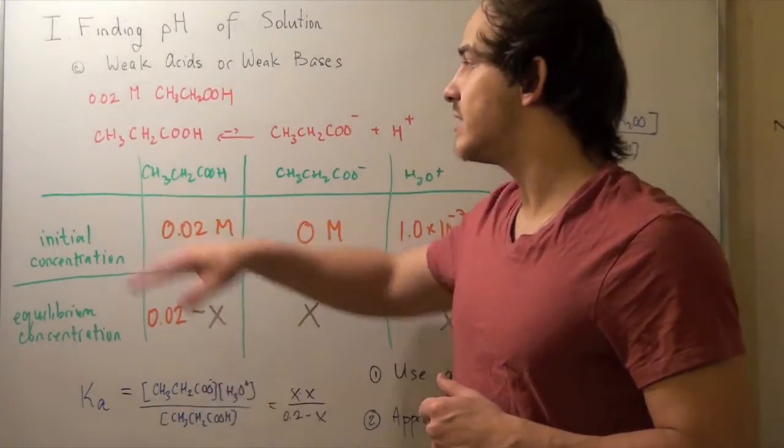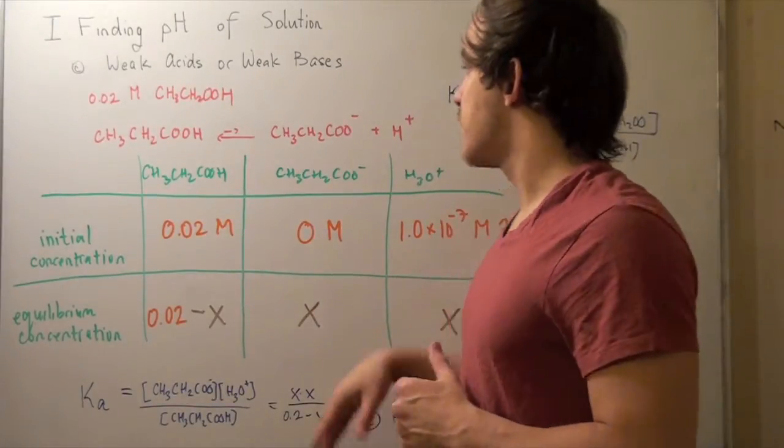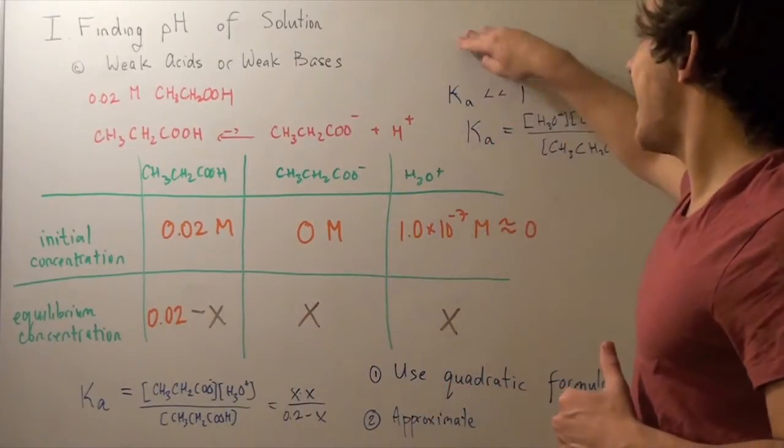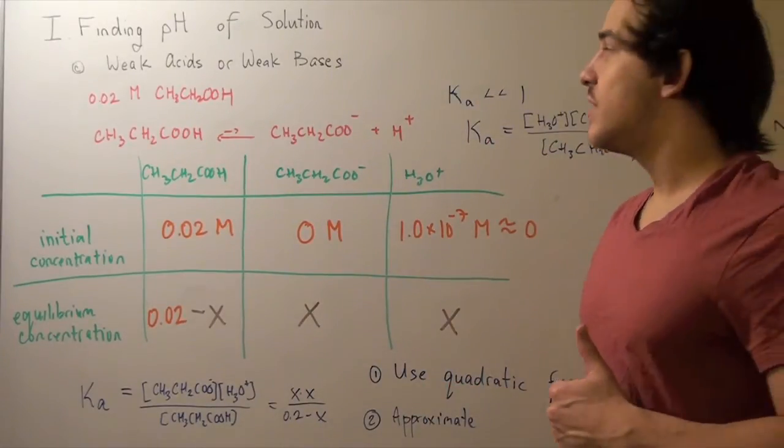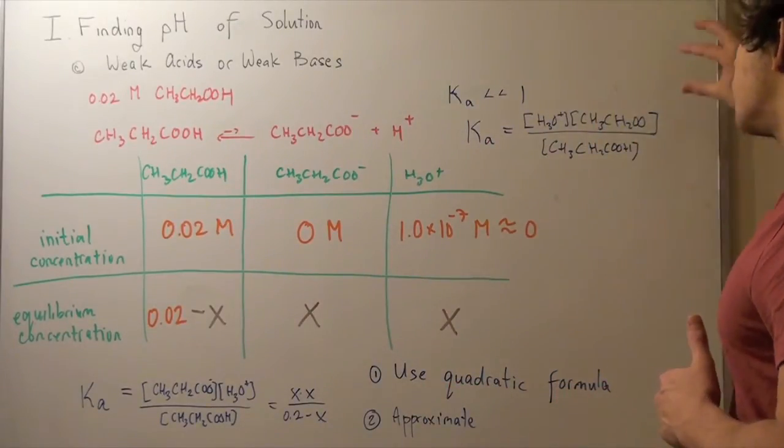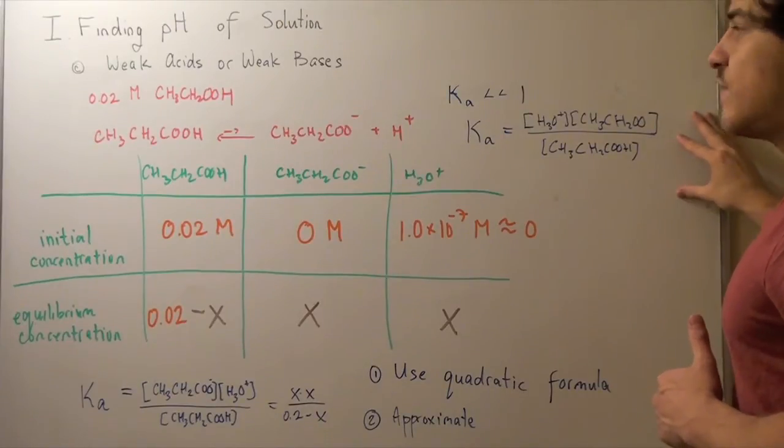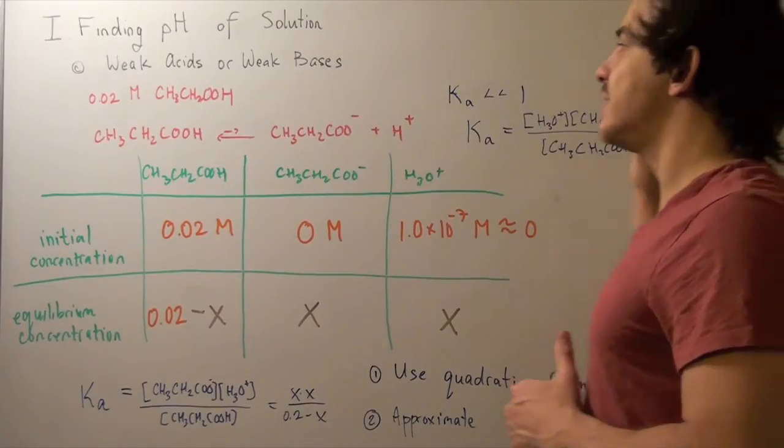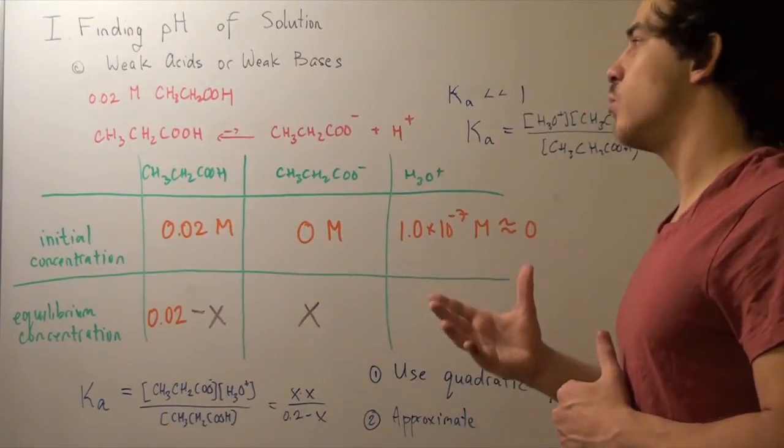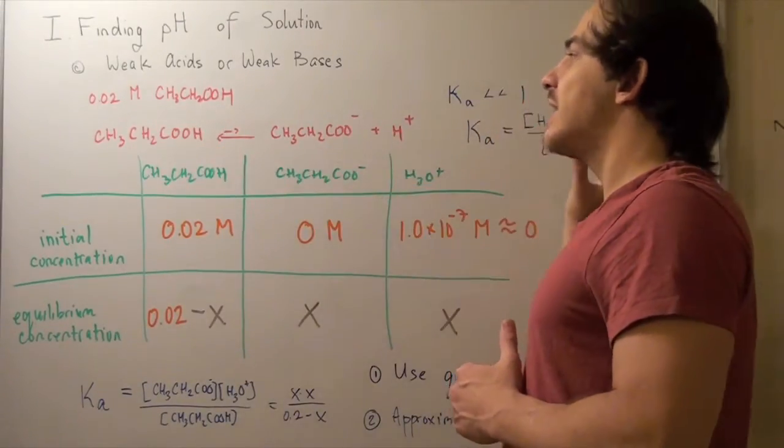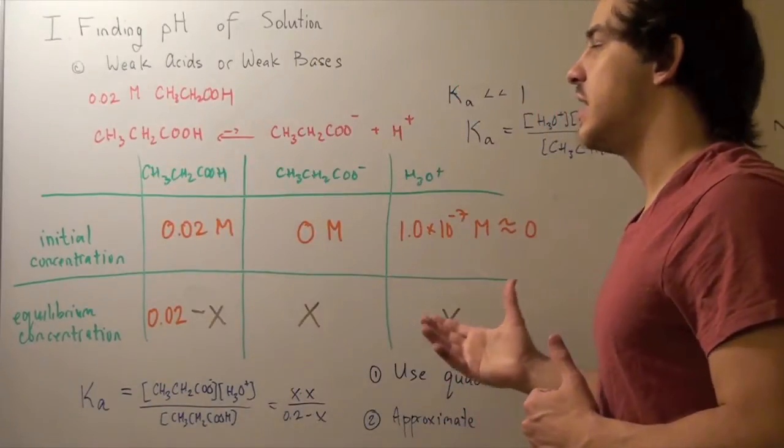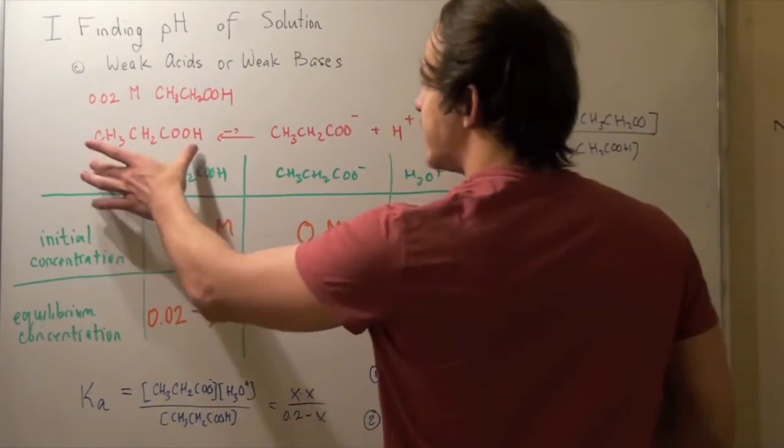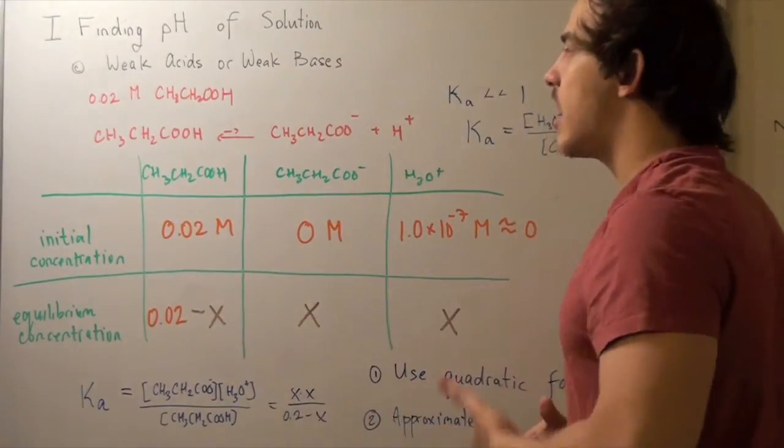We see that this guy dissociates incompletely into acetate ion and H+ ion. Well, this is because our Ka is very small. And that means our ratio of our products to our reactants is very small. And what that means is our reaction will lie to the left. Our equilibrium will lie to the left. The reactants will be favored over the products. And that means that equilibrium concentration of our reactants will be much higher than our products.